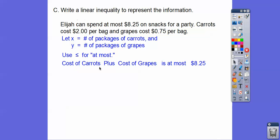So here we go. So cost of the carrots plus the cost of the grapes at most $8.25. So carrots cost $2 a bag. So if x is the number of bags, it's 2x. This is 0.75y for the grapes. And then we'll use our at most symbol. And we get that right there.